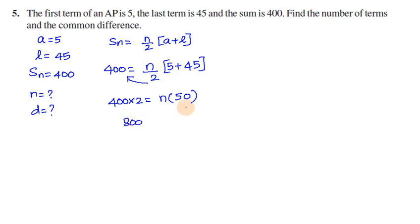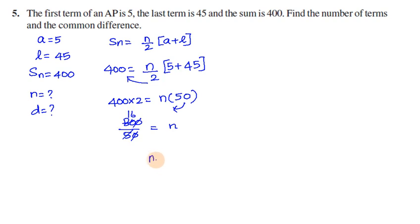So, 800 divided by 50 equals n. Cancel. 800 divided by 50 gives n equal to 16. Sorry, n value is 16. That's the number of terms.